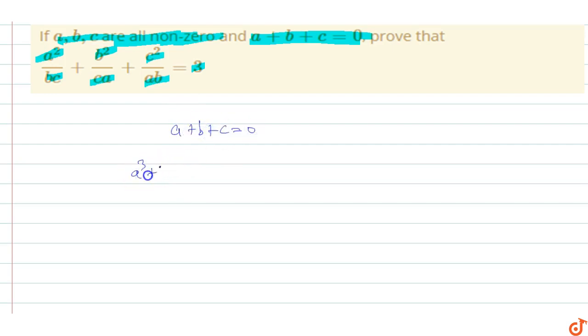We can write it as a cube plus b cube plus c cube minus 3abc equals to zero, or we can say that a cube plus b cube plus c cube equals to 3abc.